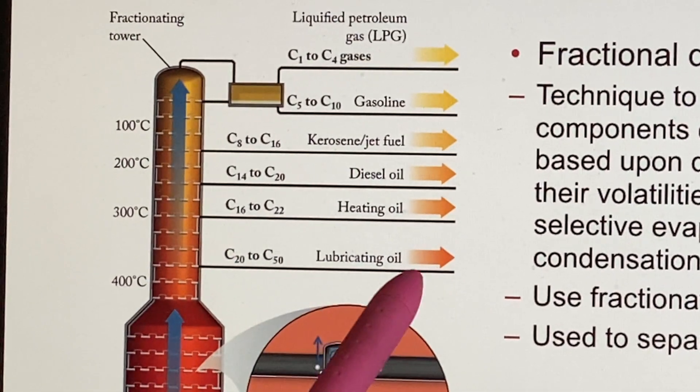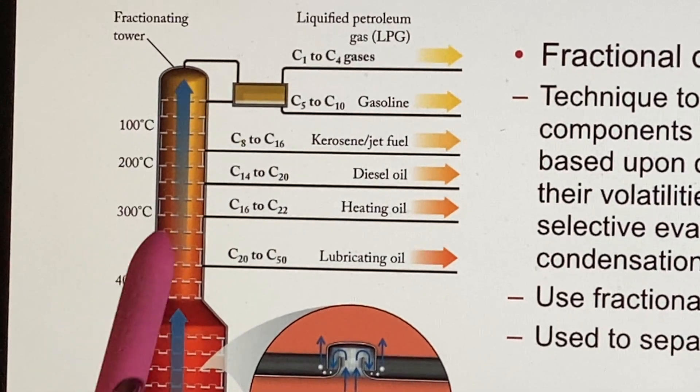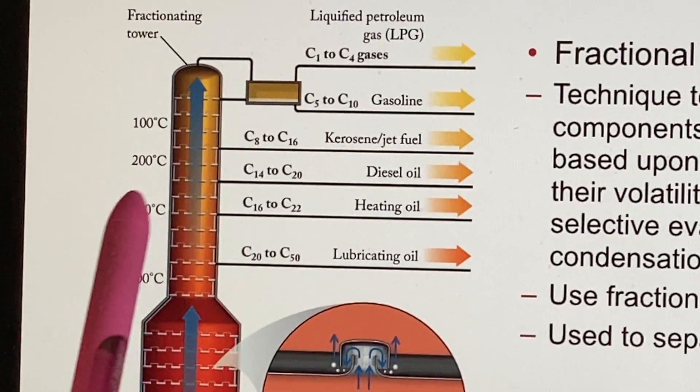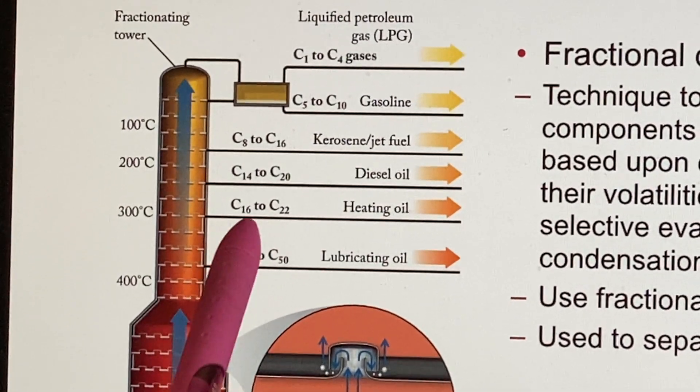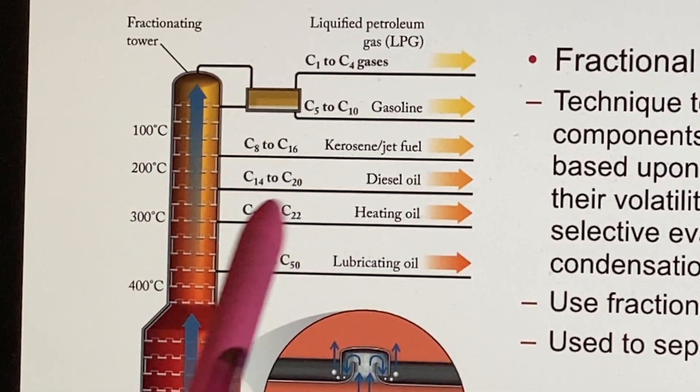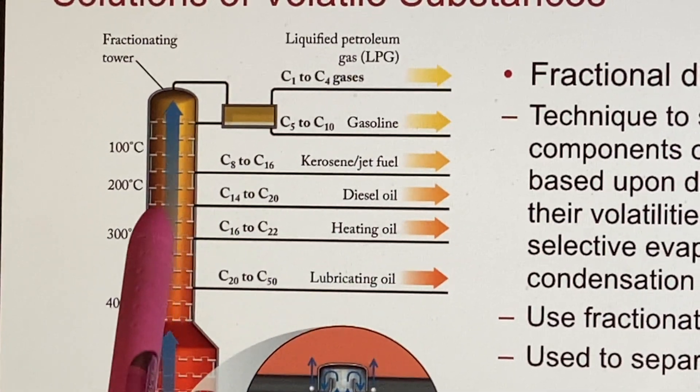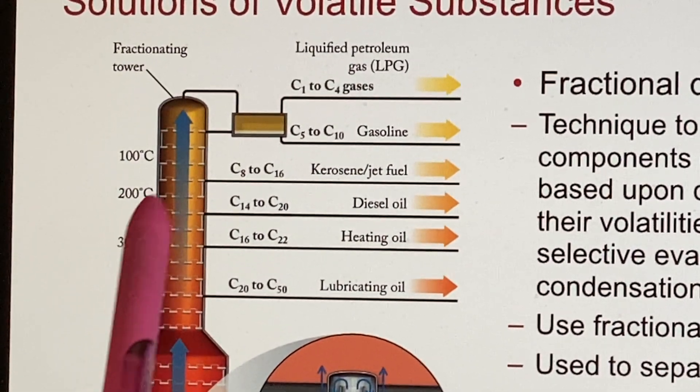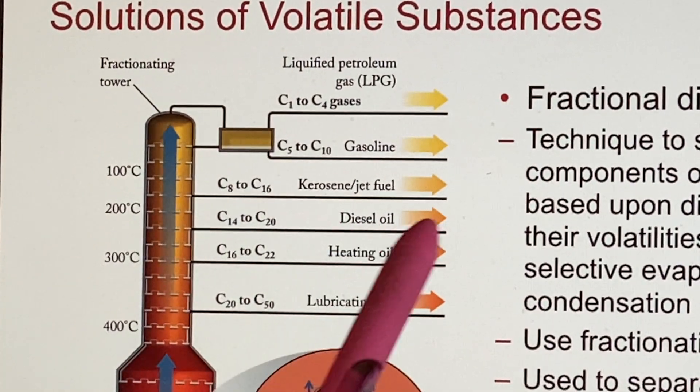As you go up, you're getting further away from the source of heat and the temperature goes down. At about 300 Celsius, you'll collect things that have chain links of 16 to 22 carbons and these are used as heating oil. Go up a little further, it's getting cooler, the chain links get shorter, 14 to 20. Here is diesel oil.